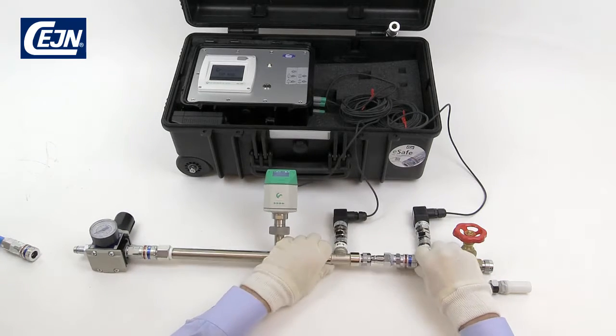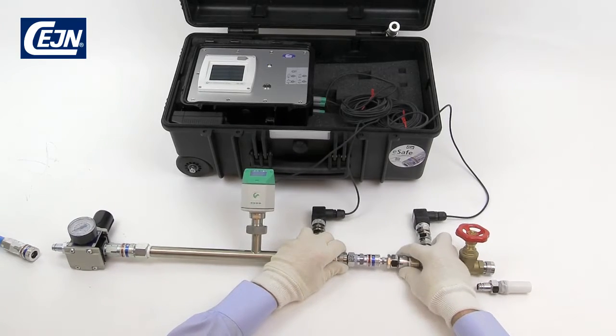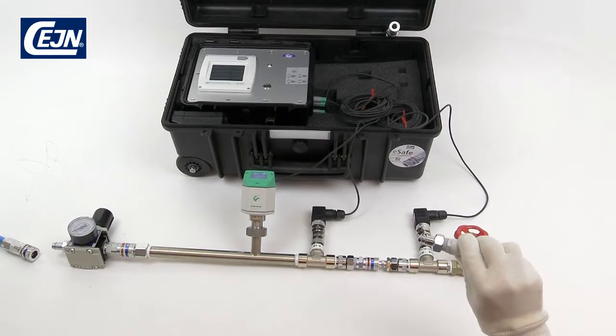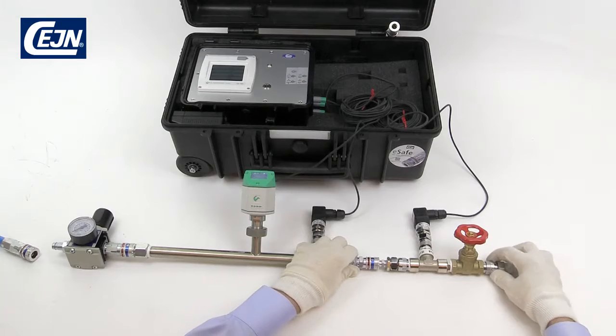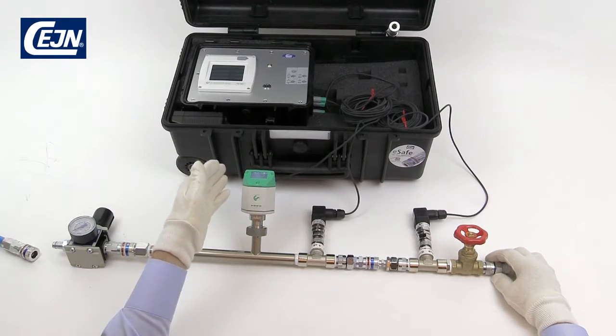Now you can finally connect all the components: the regulator, the product that we're going to measure, and the silencer. As you can see, the system has started up so we can start measuring the flow.